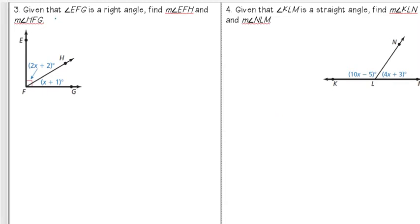Let's try number three. Number three says that given that angle EFG is a right angle, find the measures of EFH and HFG. Right angle, if you remember from yesterday, means it's a 90 degree angle. So when setting it up, I know that the whole angle EFG is equal to the smaller angles inside it added together.